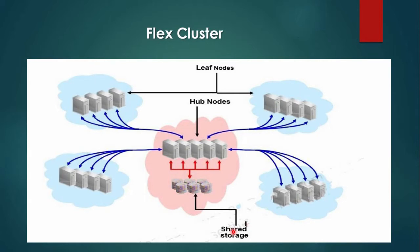The number of Hub Nodes in Oracle Flex Cluster can be as many as 64, and the number of Leaf Nodes can be many more. The Leaf Nodes are connected to the Hub Nodes, and Hub Nodes are directly connected to the shared storage.